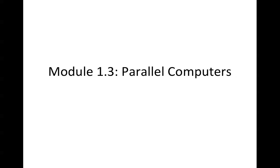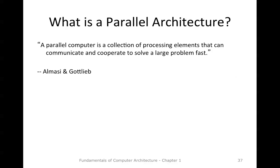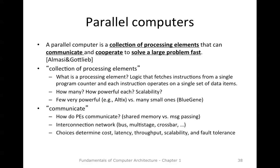So that processors can work together to solve a single problem. The definition I like to use for parallel architecture is one by Almasy and Gottlieb: a parallel architecture is a collection of processing elements that can communicate and cooperate to solve a large problem fast. If we look at this definition more carefully, the first thing to highlight is 'collection of processing elements.' What is a processing element? The Almasy and Gottlieb definition is not very clear about that.